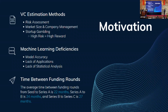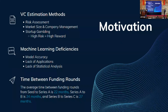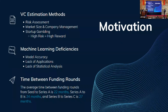The second motivation is to handle machine learning deficiencies such as model accuracy issues, lack of available applications, and lack of statistical analysis. These machine learning issues needed to be addressed, as the models can be extremely beneficial to venture capitals when they vet startups. The third is the long time between funding rounds — the average time from Seed to Series A is 22 months, Series A to B is 24 months, and Series B to C is 27 months.